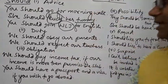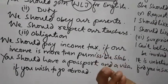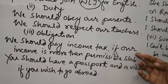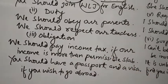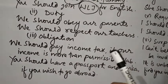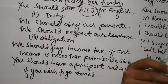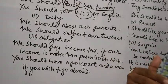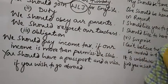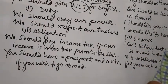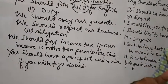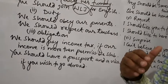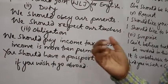The third use is Obligation — something we are bound to do. For example: 'We should pay income tax if our income is more than the permissible slab.' Hame income tax pay karna chahiye agar hamara income tax slab se zyada ho — jo abhi 2.5 se 3 lakh hai. Agar income us se kam hai to income tax pay nahi karna. Toh hame income tax pay karna chahiye.